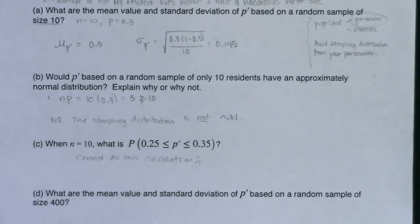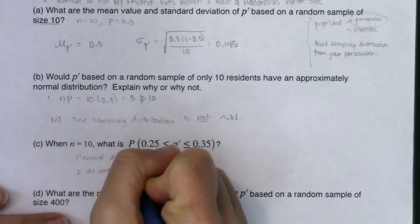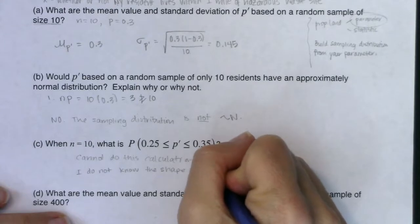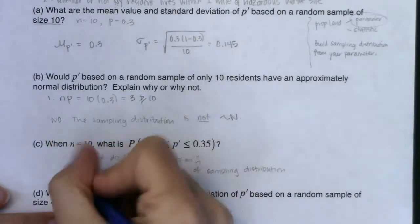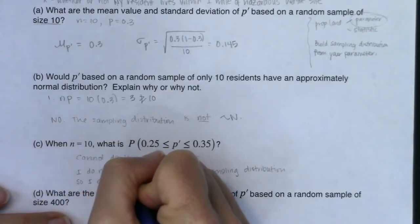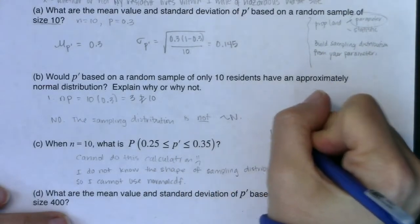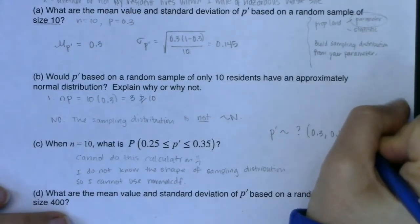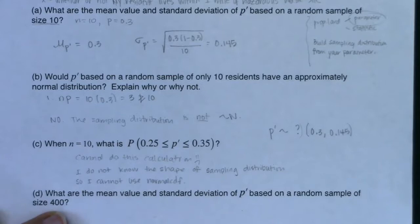The reason we can't do the calculation is that we don't know the shape of the sampling distribution, so we can't use normalCDF. We knew the mean was 0.3 and the standard deviation was about 14.5%, but that question mark for the shape is what's blocking us. We cannot proceed without knowing the distribution is approximately normal.